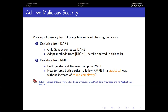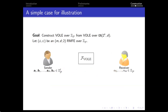So far, we have completed the semi-honest construction. The malicious adversary can cheat by either not deviating from the data encoding, or by deviating from RmD. We consider these two cheating behaviors separately. In the first case, only the sender needs to compute the data encoding, and we can adapt methods from the existing literature. In the latter case, which is much more complicated, both sender and receiver need to compute RmD, and it is much harder to solve in a statistical way without increasing communication complexity.